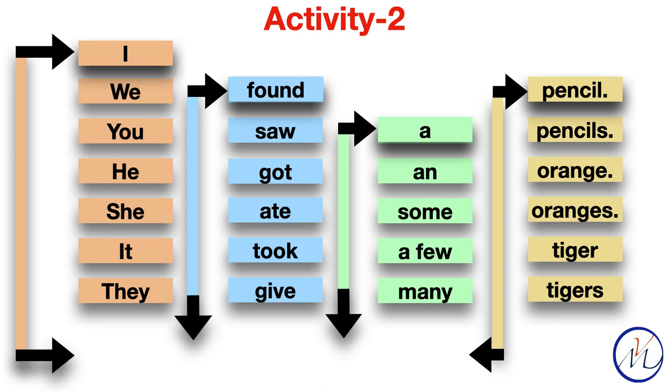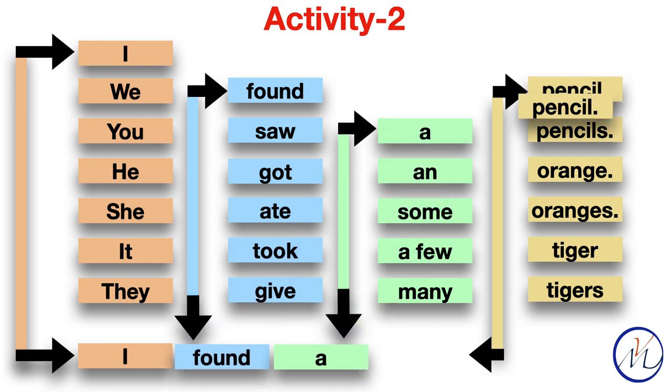Now let's do the second activity. Here there are four columns and many words in each column, so we will take one word from each column and make a sentence. For example, first: I found a pencil.